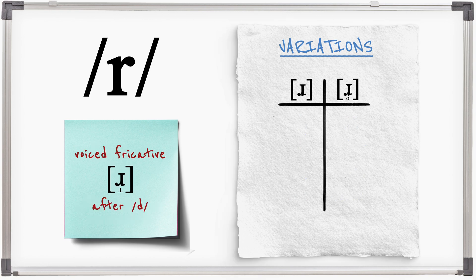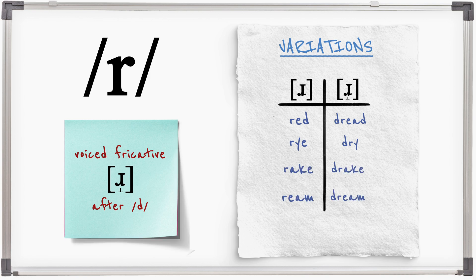After D, R is a voiced fricative. Compare: shrug / dread, rye / dry, rake / drake, ream / dream.